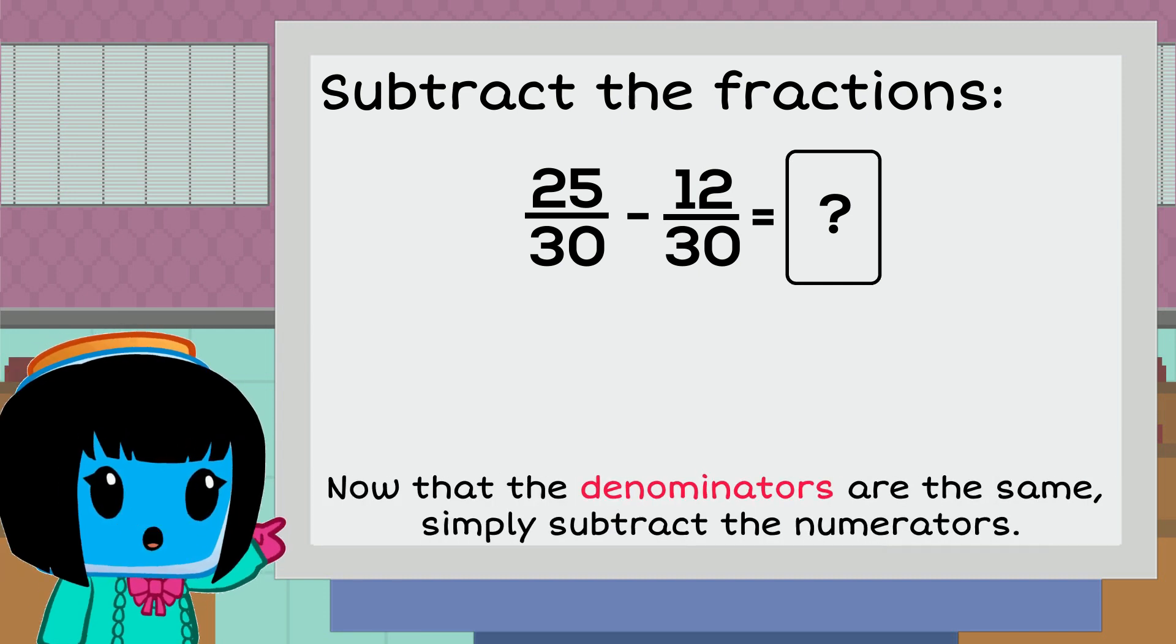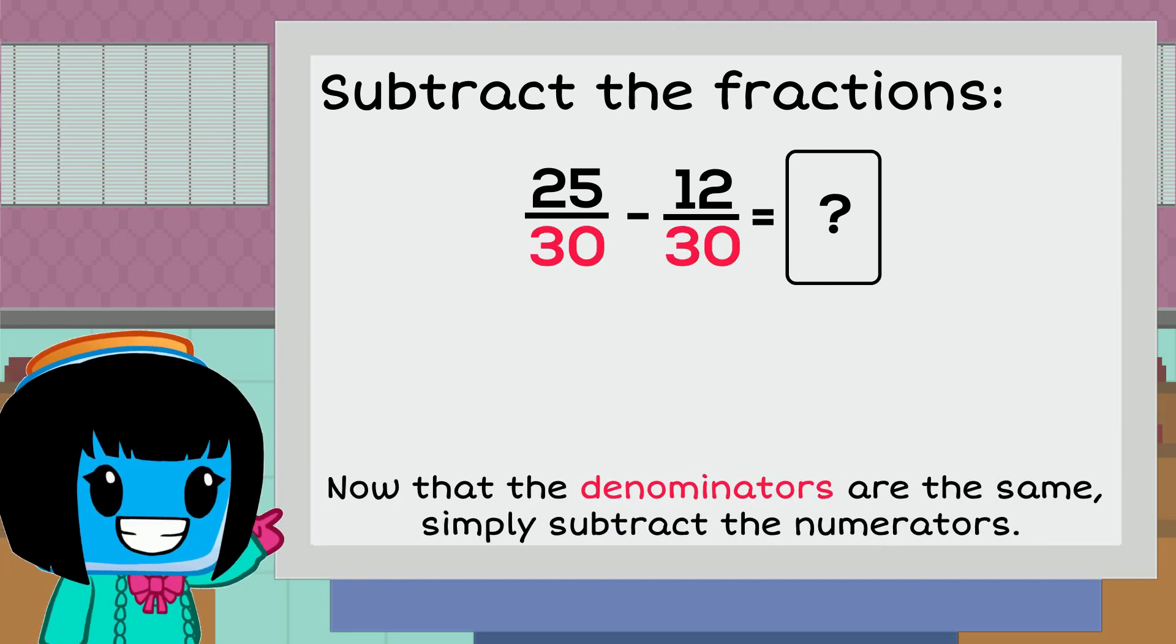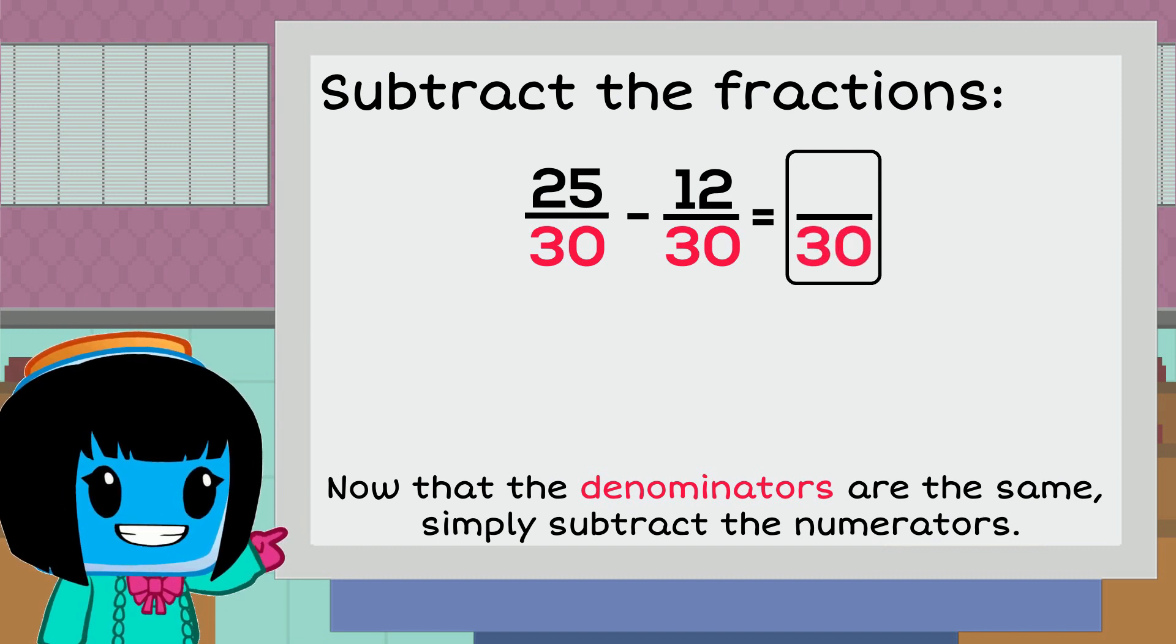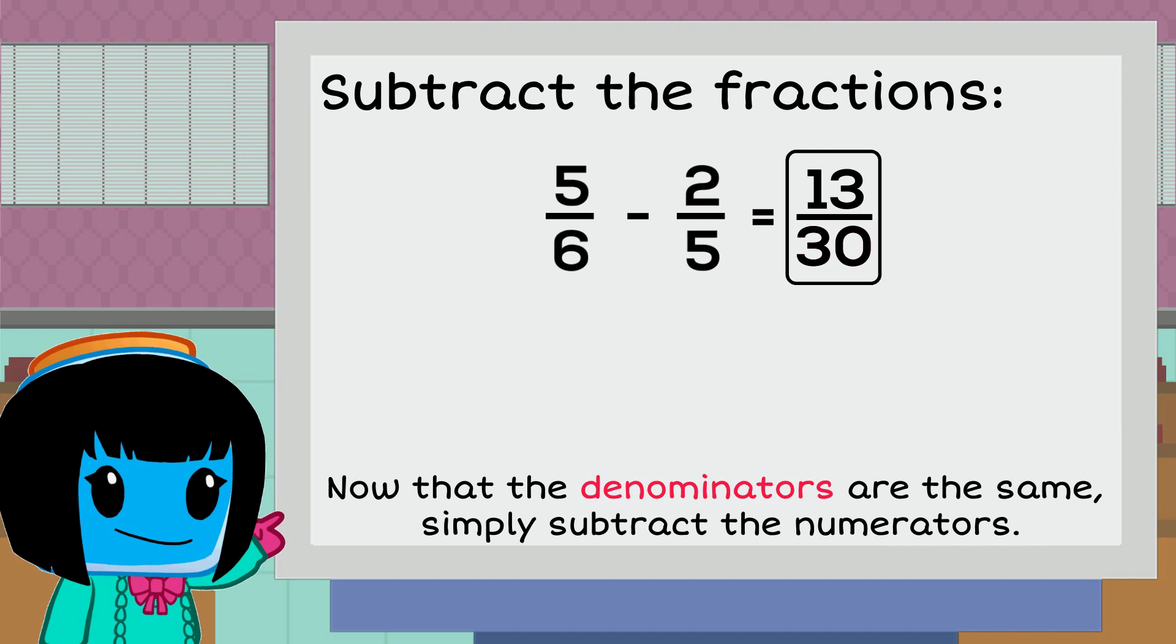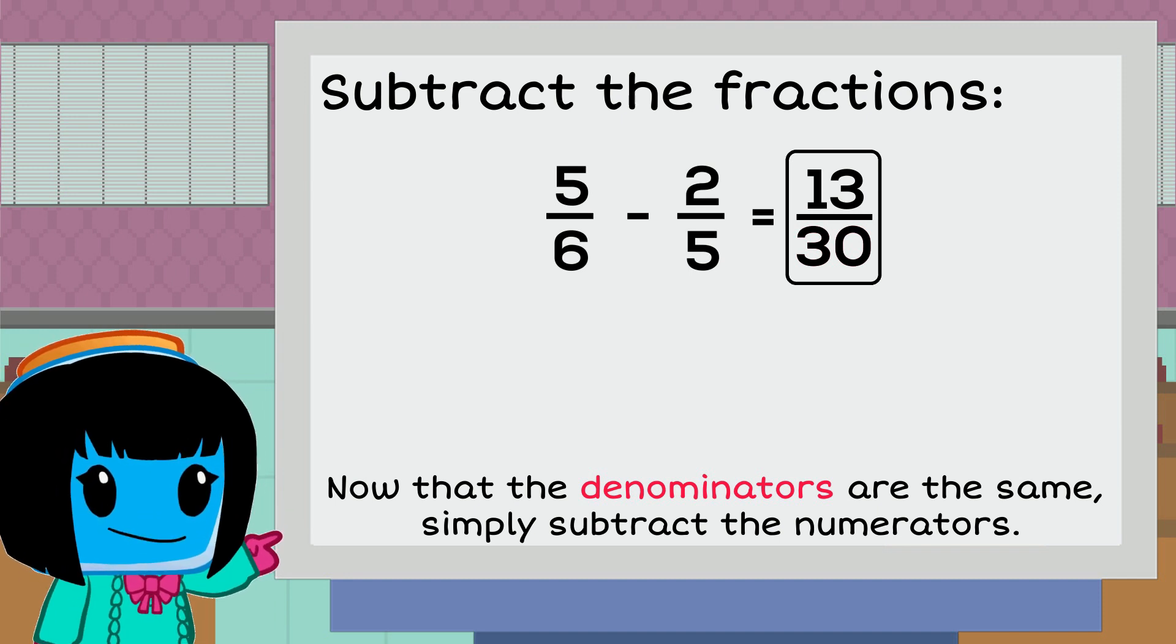Now that our two fractions have the same denominators, we can go ahead and subtract. So we're going to leave the denominator as 30 and just subtract our numerators. 25 minus 12. Well, that equals 13. So our difference is 13 thirtieths.